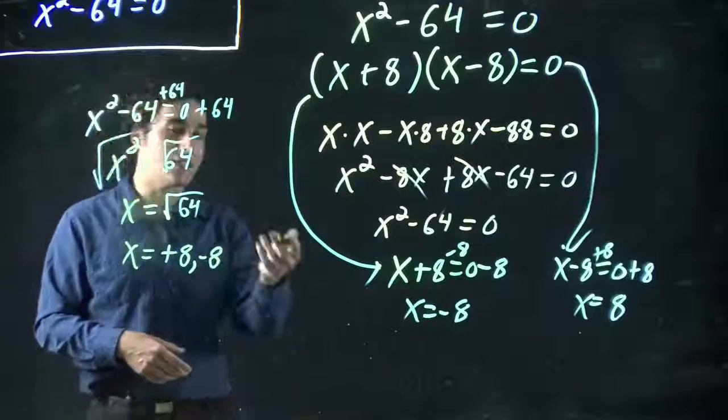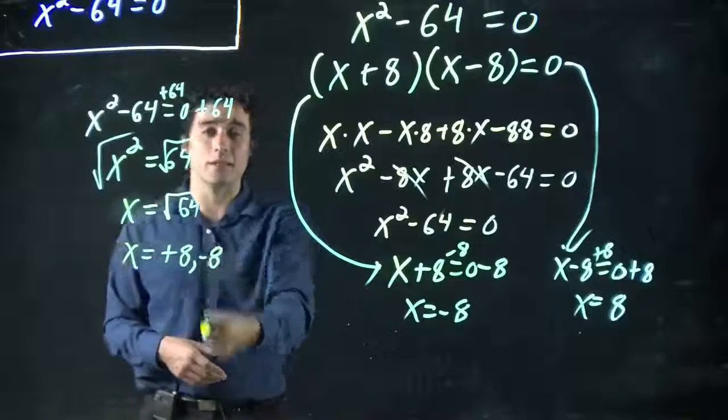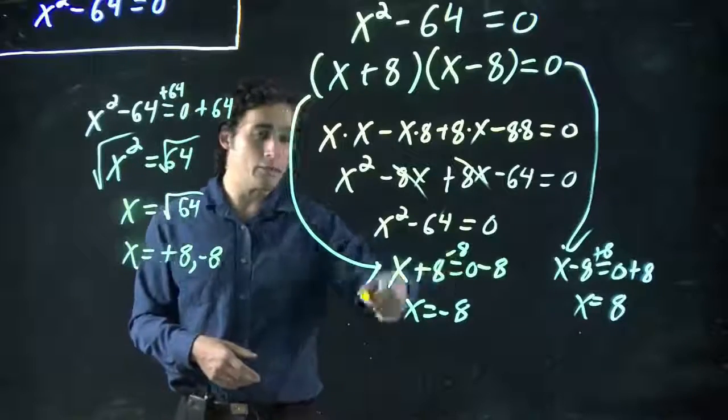Well, the square root of 64 is either plus or minus 8. Because remember, minus 8 times minus 8 equals 64. Plus 8 times plus 8 is 64. So, both gave me a solution.